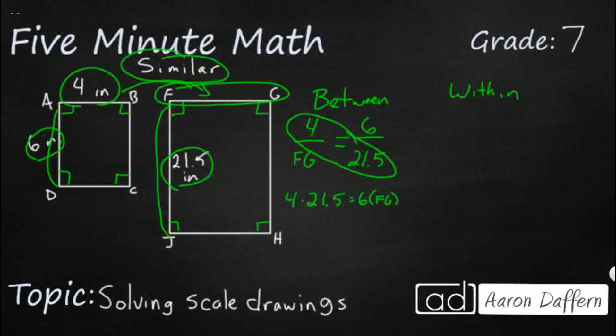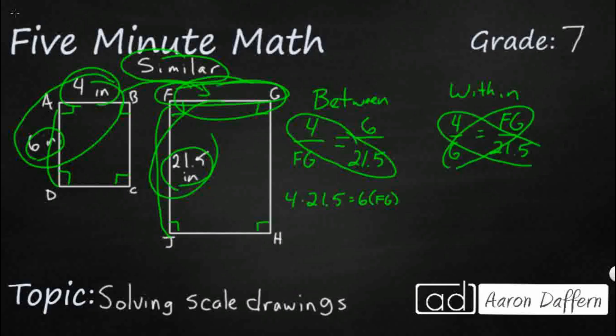Now if we wanted to do it within, we could have simply said let's take the short side and the long side within one of the rectangles, so four over six, and then we'll just kind of match that over here. That's going to be FG short side over our long side twenty one point five. And if we do our cross multiplication, guess what we get? The same thing. Four times twenty one point five equals six FG. So it doesn't really matter which way you set it up.